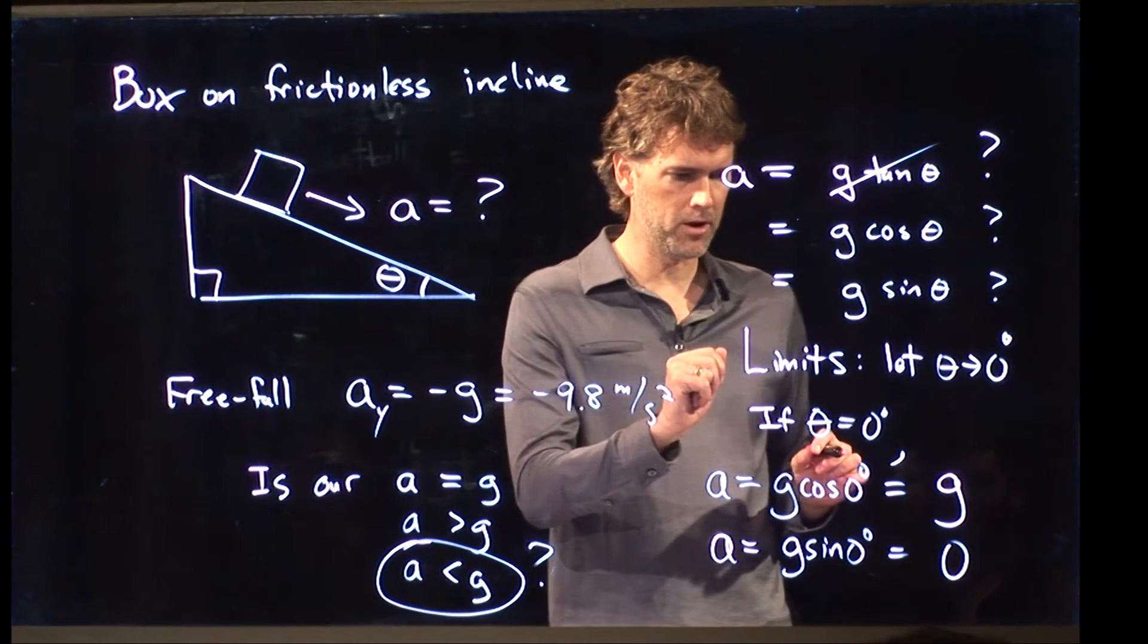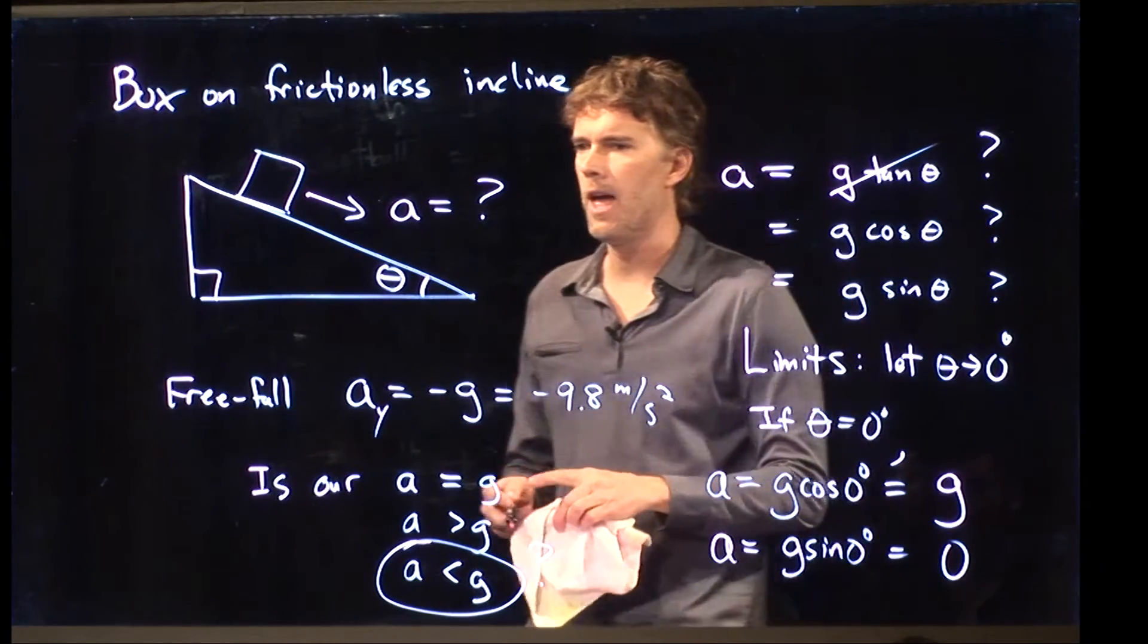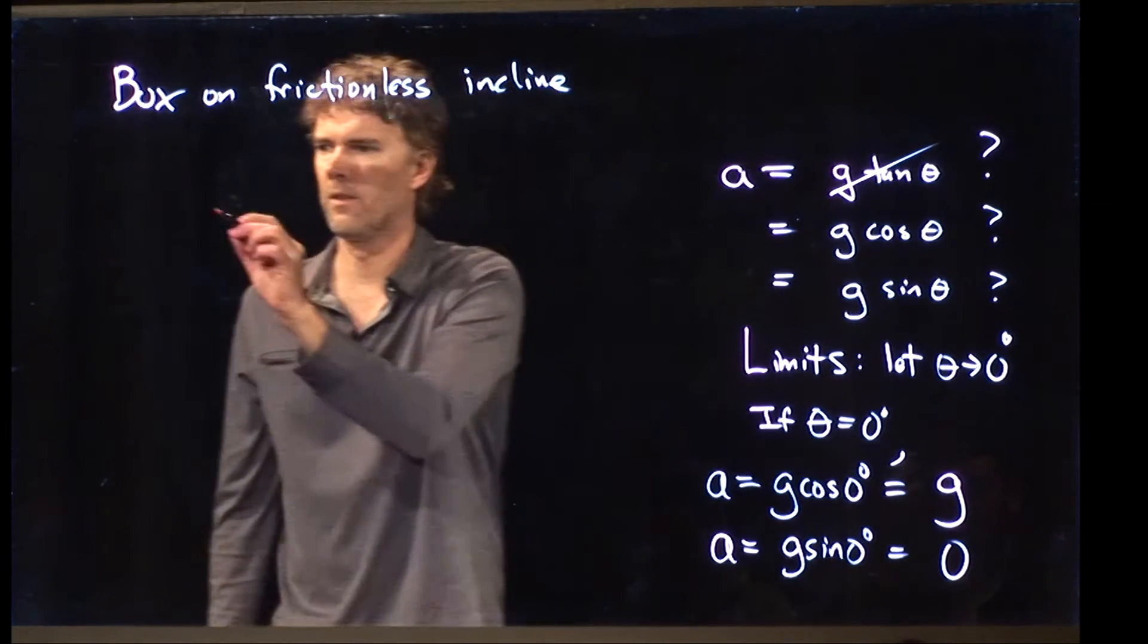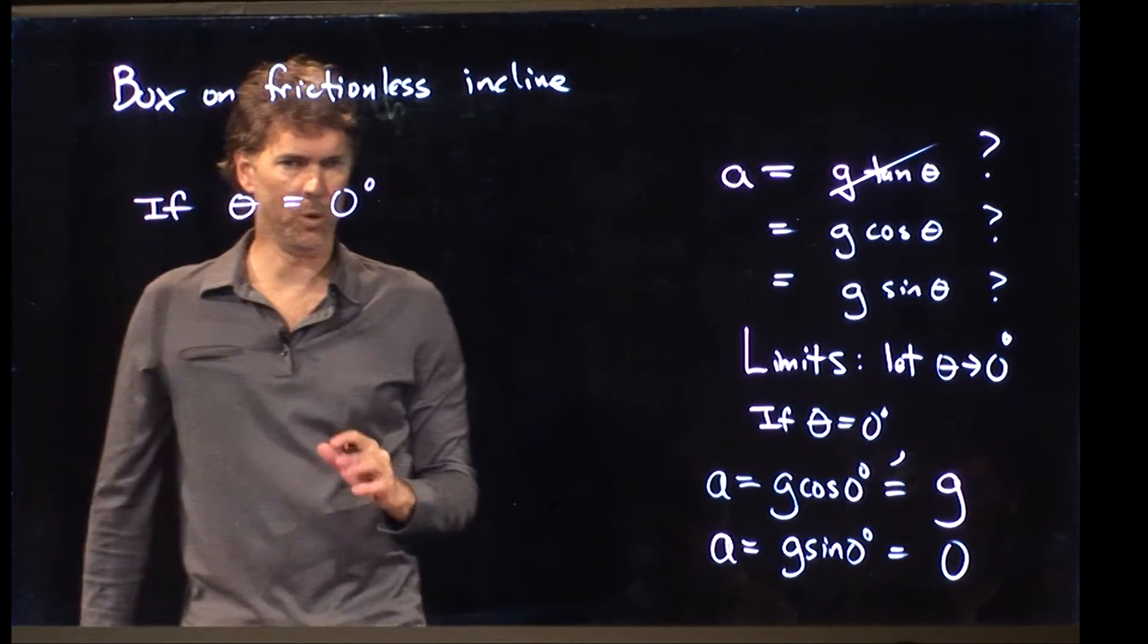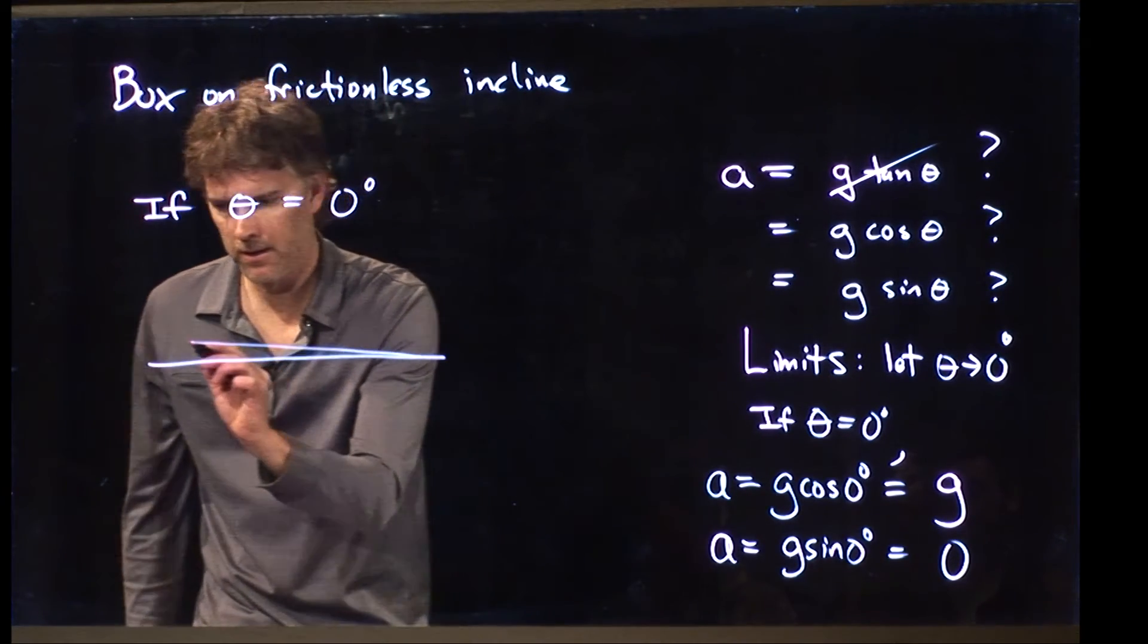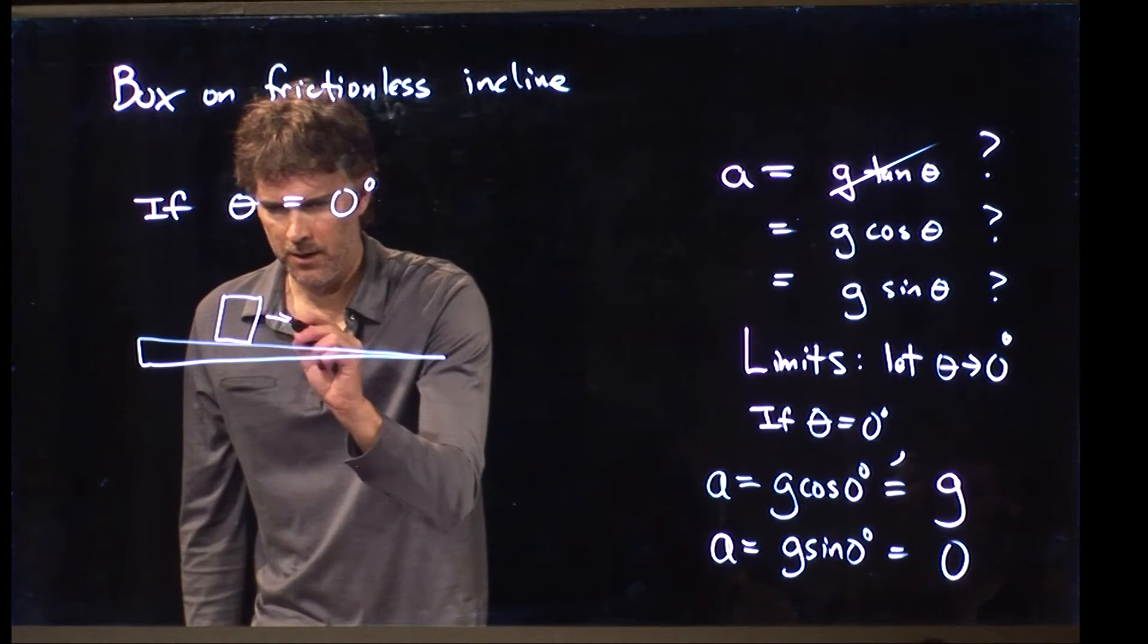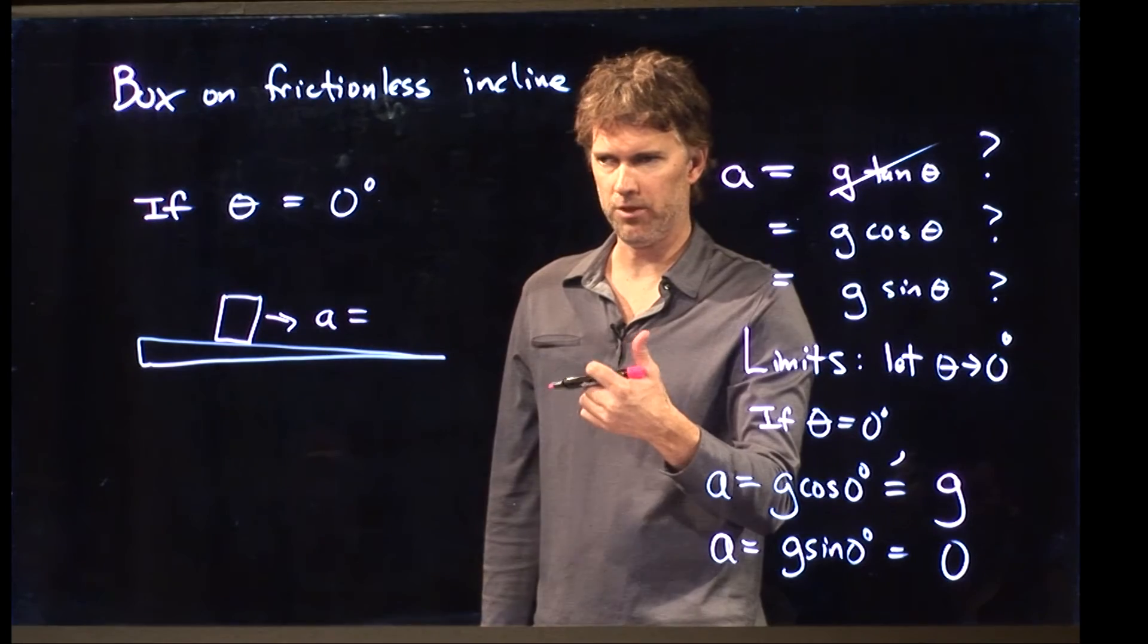So now all we got to do is figure out which one is the right limit. If theta equals zero, should we have an acceleration that's equal to gravity or should we have an acceleration that's equal to zero? And remember, we define the acceleration down the incline. So let's look at that. If theta equals zero degrees, or we'll say it's approaching zero degrees, then what does my triangle look like? It looks like nearly a flat surface. And if it's a flat surface, what do you think the acceleration should be in that direction?